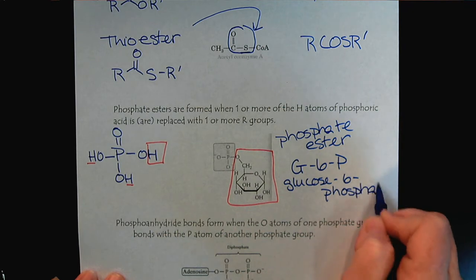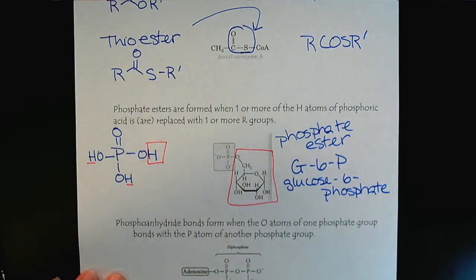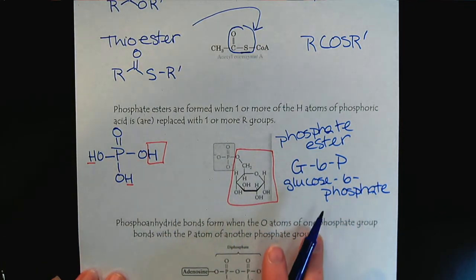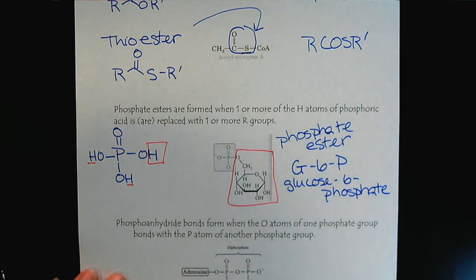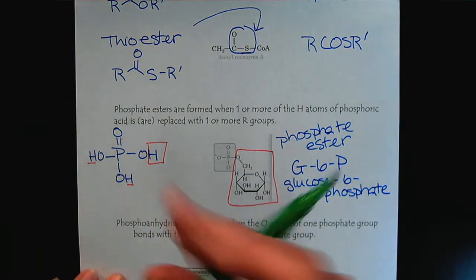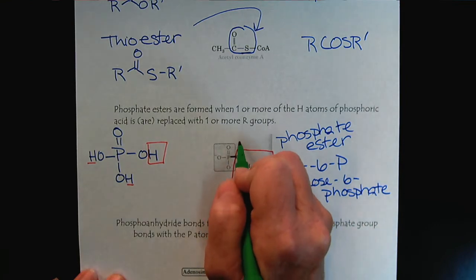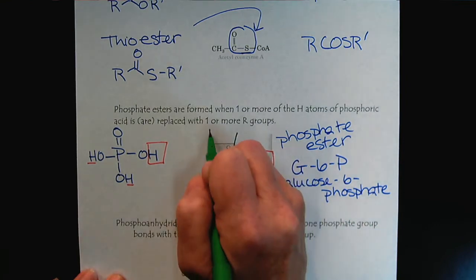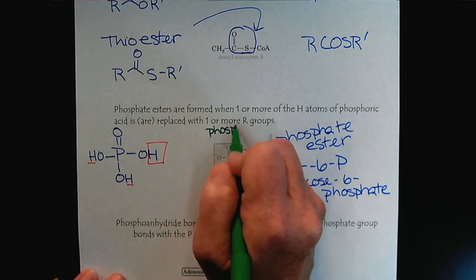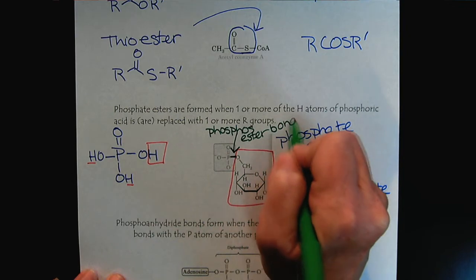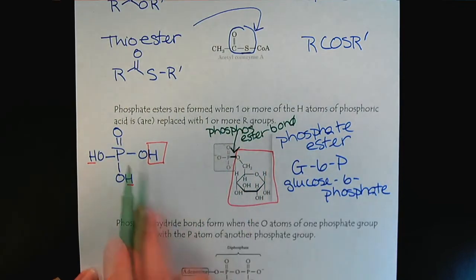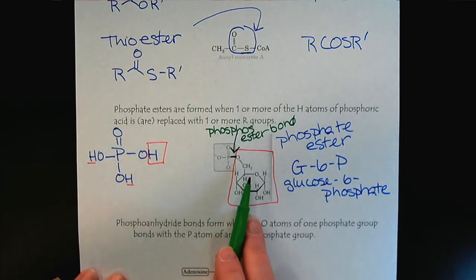And right now the emphasis is just to recognize the functional groups, but we'll come back to this later when we study biochemistry. So then this bond right here is described as the phosphoester bond because it links the phosphate group to the R group.